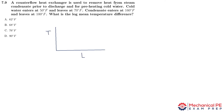Let's draw each of the two streams. We have the cold water entering at 50 and leaving at 70, going from left to right. Now we have the condensate entering at 160 and leaving at 100. If this was parallel flow, we would draw it moving from left to right as well.